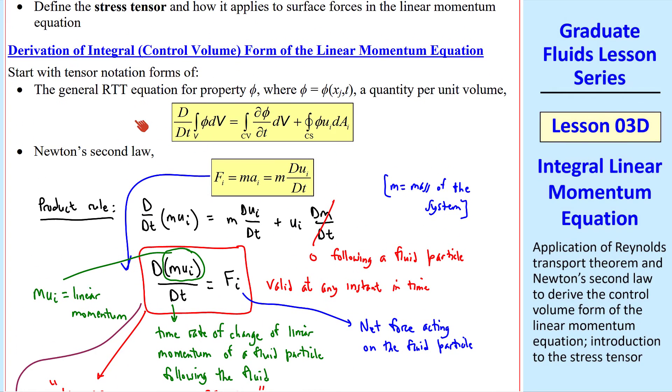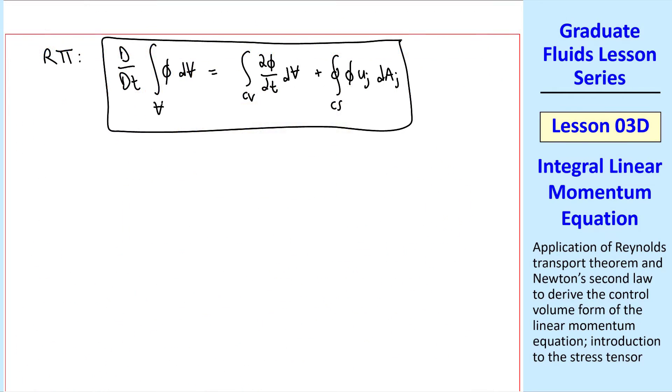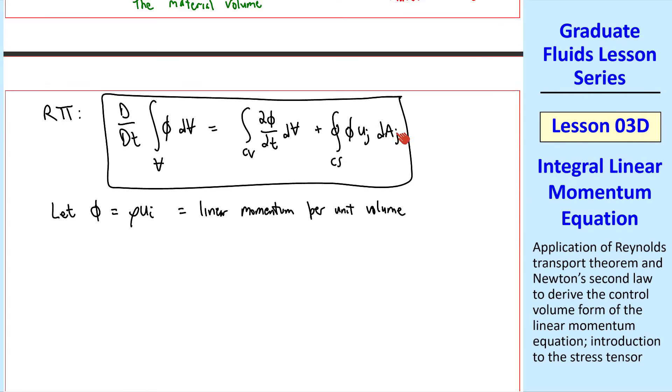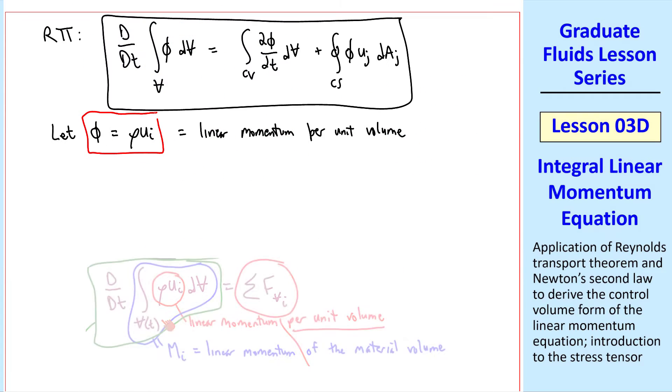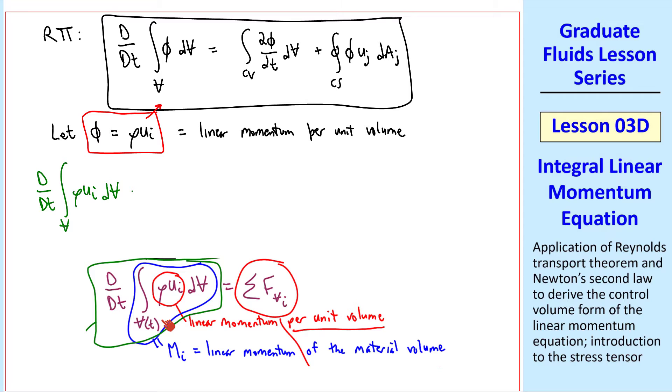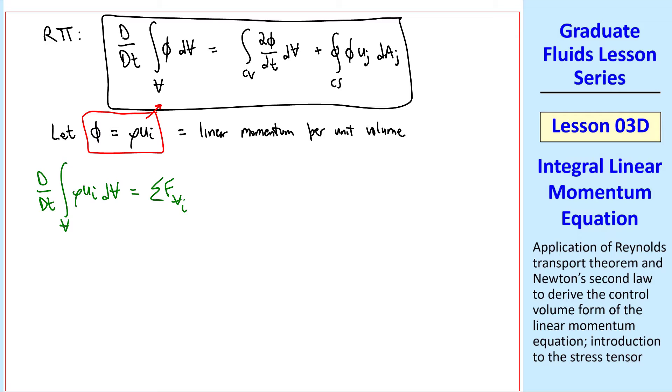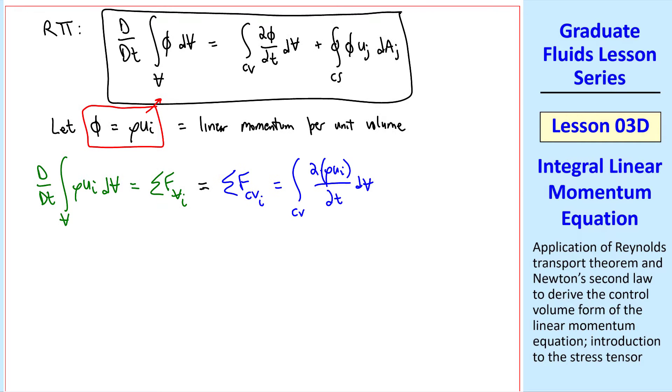Now let's apply our Reynolds transport theorem. I rewrote the Reynolds transport theorem here. To get this into the proper form, we let phi equal rho ui, the linear momentum per unit volume, so that it agrees with the left-hand side of our Newton's law. Plugging this in, we get the time rate of change of our material volume equals sum of all forces on the material volume. This part comes from Newton's law. This is also equal to the sum of forces on the control volume. And from the Reynolds transport theorem, we have the volume integral and the surface integral.